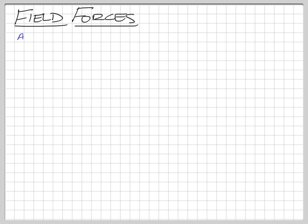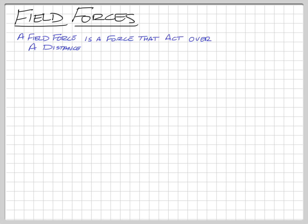We're going to begin our new unit. Our new unit is field forces. A field force is a force that acts over a distance — a force that acts without touching anything. Contact forces are what we've been dealing with so far. Tension is a contact force. Friction is a contact force. But field forces work in such a way that the two objects involved don't have to touch each other.